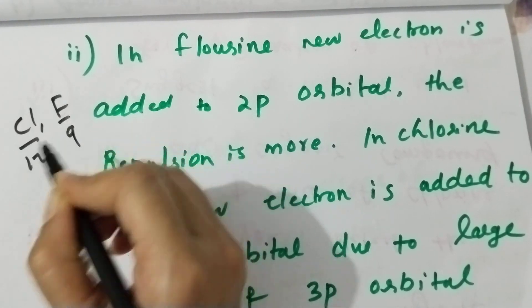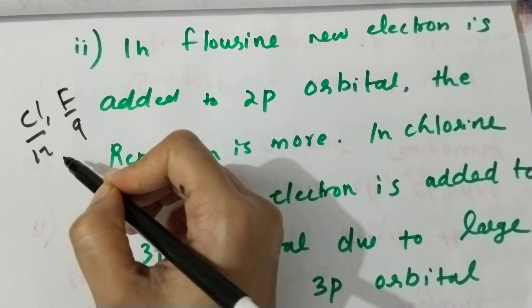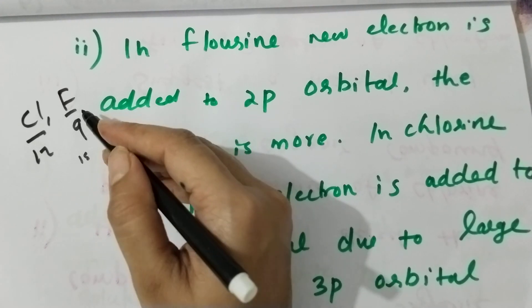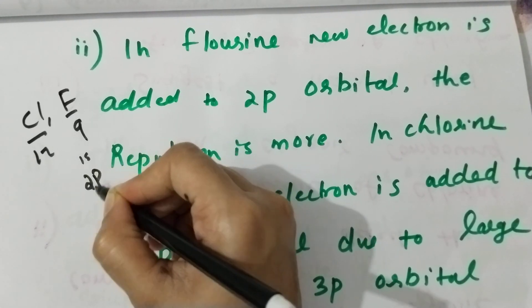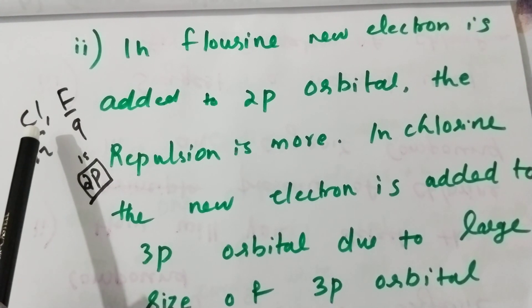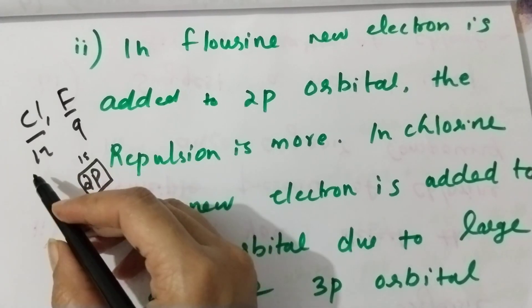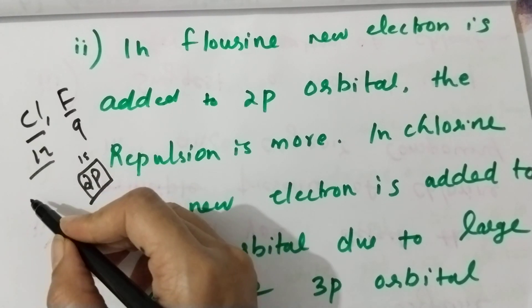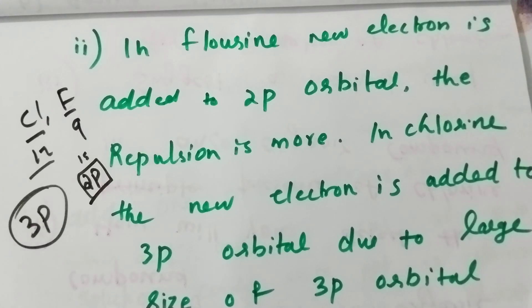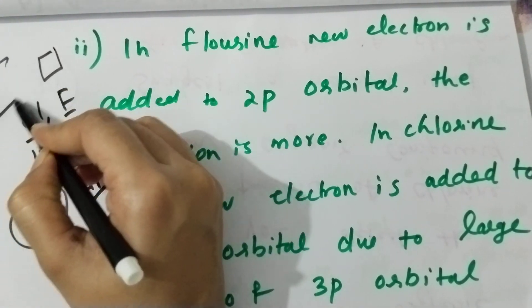Chlorine is atomic number 17, fluorine is atomic number 9. Using electron configuration: fluorine is 1s2, 2s2, 2p5. Chlorine is 1s2, 2s2, 2p6, 3s2, 3p5. Fluorine has electron repulsion in the compact 2p orbital.